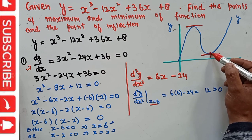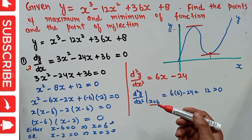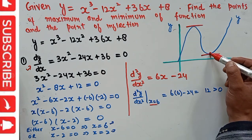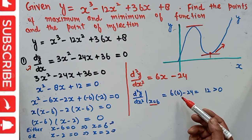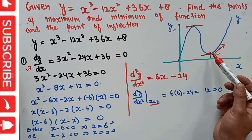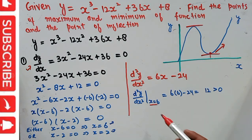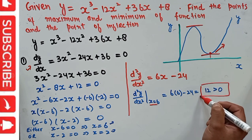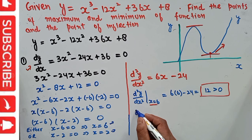We can see from the graph that at the minimum point the slope is zero, and after that the curve is upward sloping — meaning the slope is increasing. The positive second derivative confirms that x = 6 is indeed the minimum point of the function.